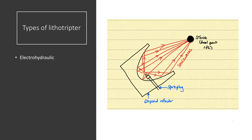However, the energy generated can be quite high, and the focal zone at the stone can be a bit wider than with more modern lithotriptors. One of the other disadvantages of the EHL device is that the spark plugs have a limited lifespan and may need to be replaced continuously.